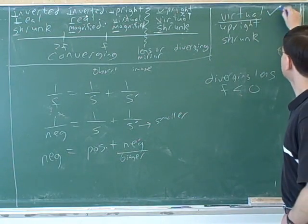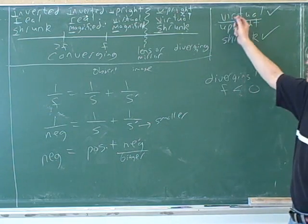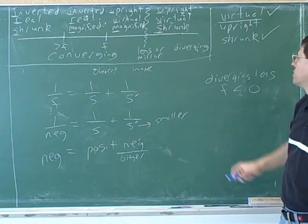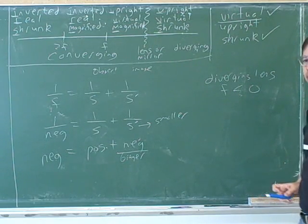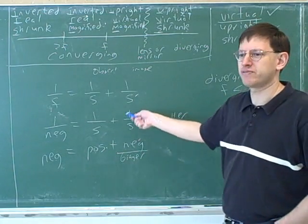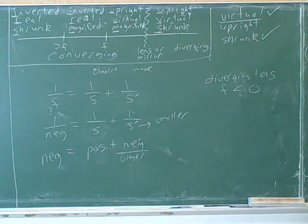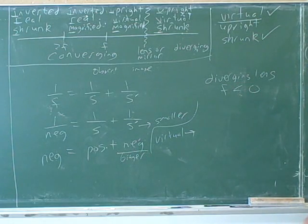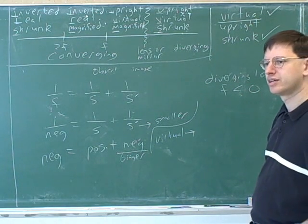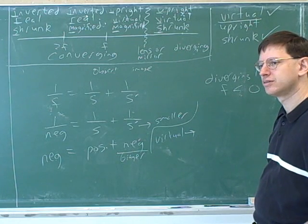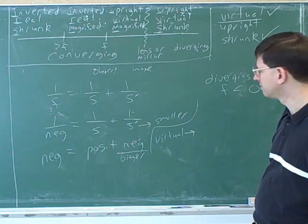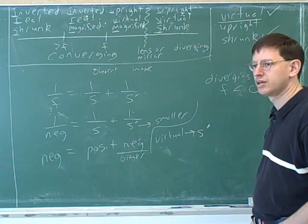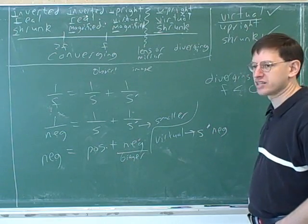We've shown that it is virtual, and we've shown that it's shrunk. How do we know that it's upright? We have the memory aid 'ultraviolet' — upright always goes with virtual. But how did we show originally that upright always goes with virtual? Let's say we have a virtual image. What does that tell you directly? Which variable does that tell you about? A virtual image tells you about S prime — that it's negative.